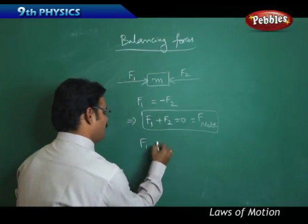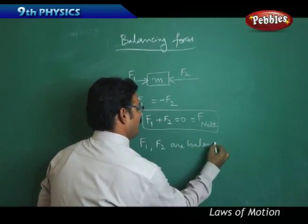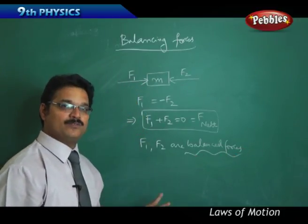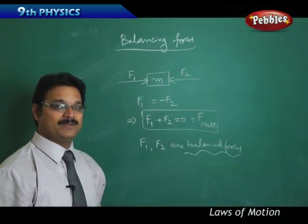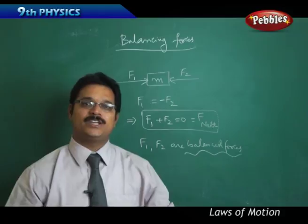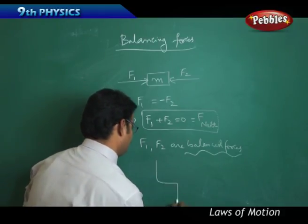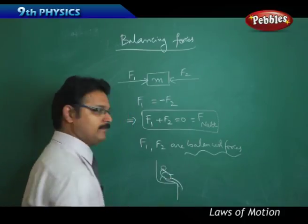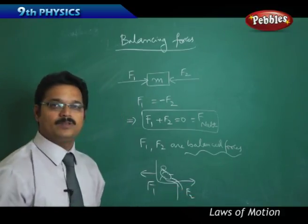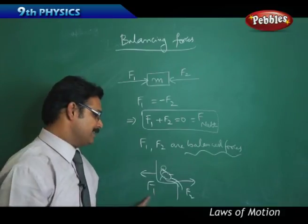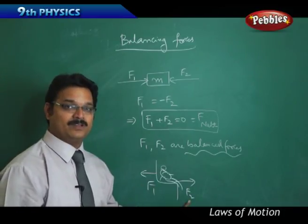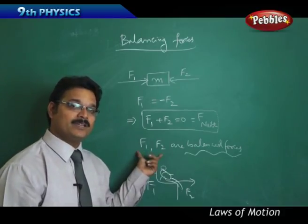F1 and F2 are called balancing or balanced forces, because the net force acting on the body is zero. That means even though two forces are acting on the body, there is no effect on the body. Like you are at rest sitting on a chair, and one person is pulling you in one direction and another person is pulling in the opposite direction — but still there is no effect on you because the resultant force is zero. This is only possible when F1 equals F2.